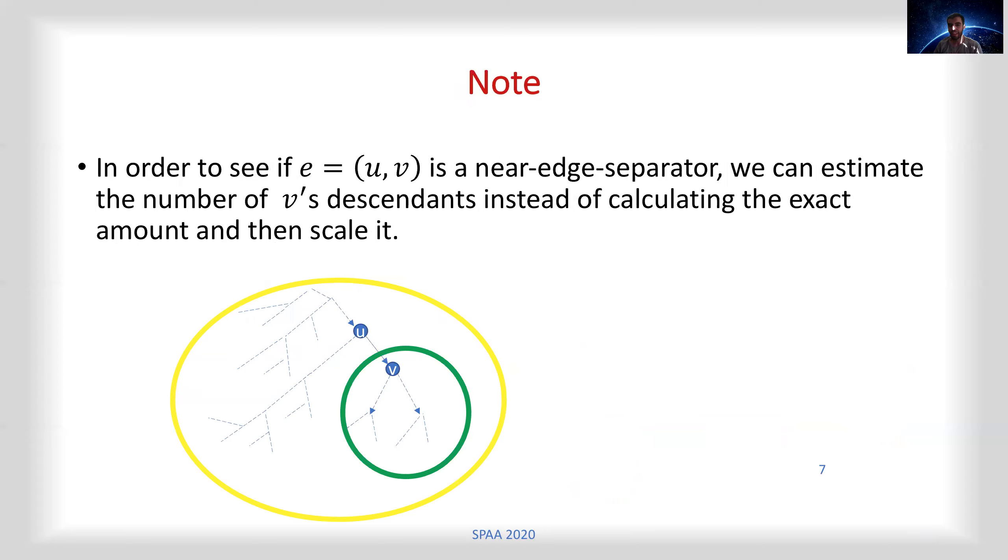In order to see if an edge e from u to v is a near separator, we can estimate the number of descendants of v using a sample of all the nodes, and we can rescale the number of nodes which lie in this green section to find an estimation of the number of descendants of v.